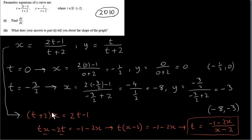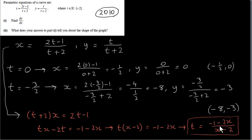Bring the non-t terms to the right-hand side: minus 1 stays on the right and 2x is moved over. Factorizing t out of the left-hand side gives t(x − 2) = −1 − 2x, so t equals (−1 − 2x) over (x − 2). We have t expressed in terms of x.